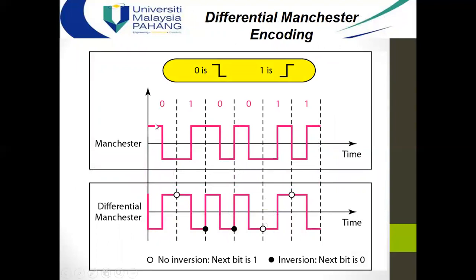Comparing the three: Manchester (IEEE) has zero as high-to-low and one as low-to-high in the middle of the bit duration. Differential Manchester has zero as an inversion at the beginning of the bit, meaning it switches from the previous level, while one means no inversion — continuing directly. The next zero again causes an inversion, and so on. This is how the three Manchester variants differ in appearance and behavior.